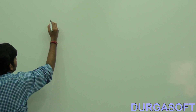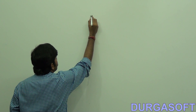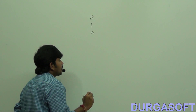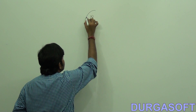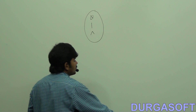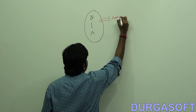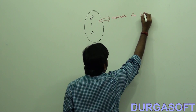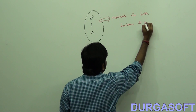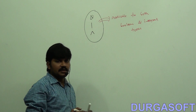Here, we covered the AND operator, OR operator, and XOR operator. These three operators are applicable for both boolean and integral types.